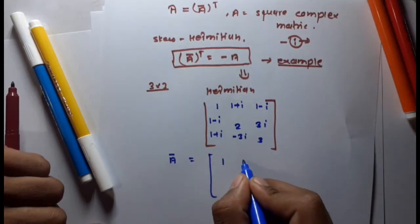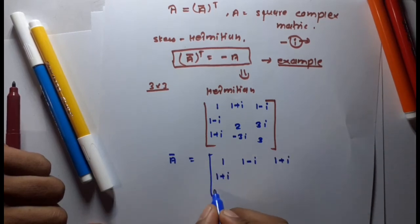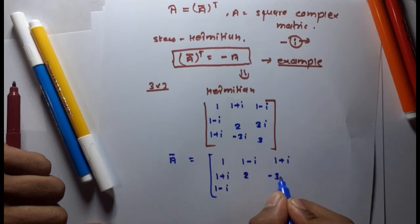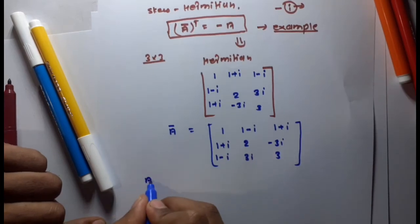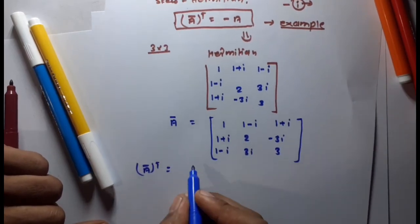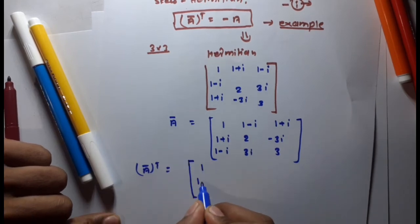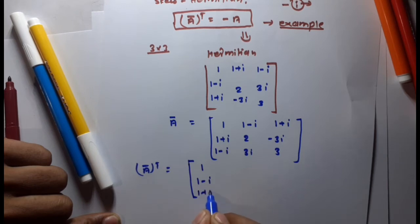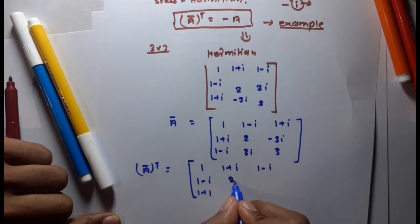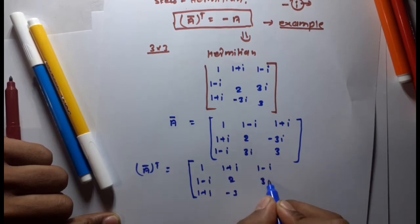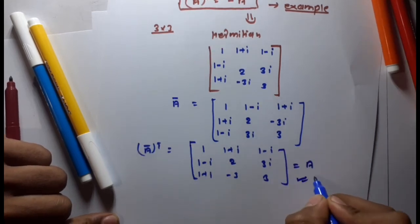Taking the conjugate of the matrix and then the transpose gives back the original matrix A, confirming this is a Hermitian matrix — that is, A-bar transposed equals A.